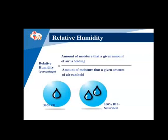The next property is relative humidity, which is very important in the design of air conditioning systems because it determines the moisture content of air as a percentage. Relative humidity is defined as the ratio of the amount of moisture a given volume of air is holding to the maximum amount of moisture that same volume of air can hold. At 100% relative humidity, the air is fully saturated with moisture.